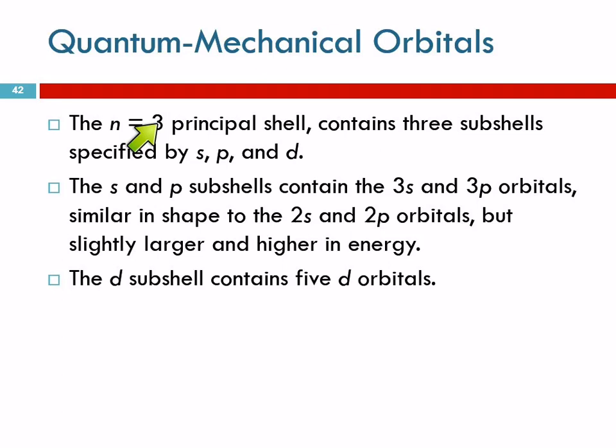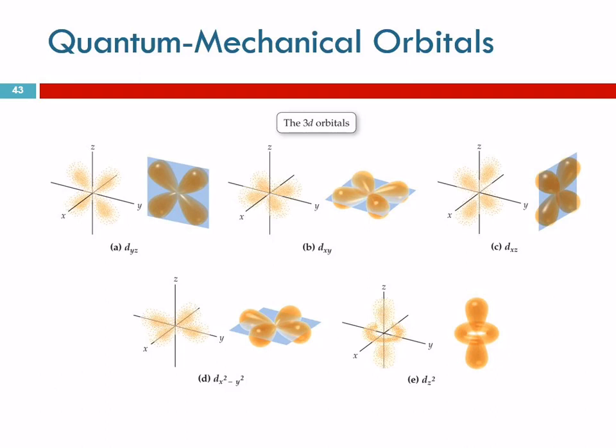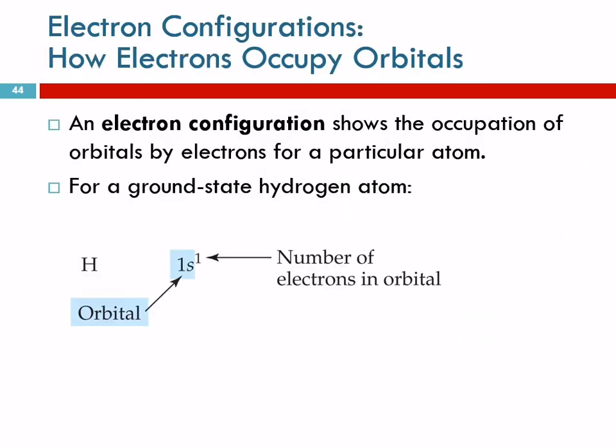So, n equals three has s, p, d, and f. The s and the p subshells there are the same shape as they were in the second level, but they're bigger. And then the d sub shell has five different orbitals, and these are really wacky. Aren't those lovely? Those are complicated. There they are. I won't make you draw them, but there's five of them. Strange.